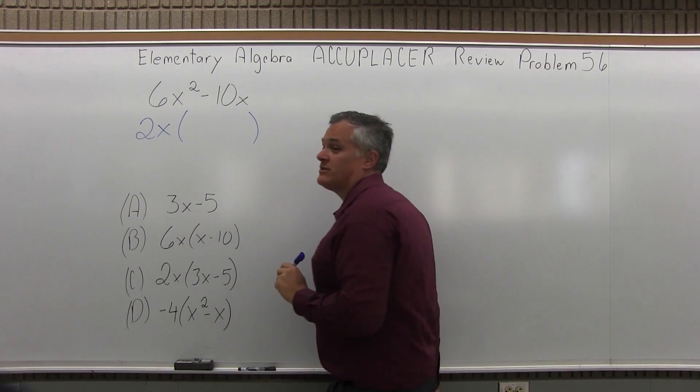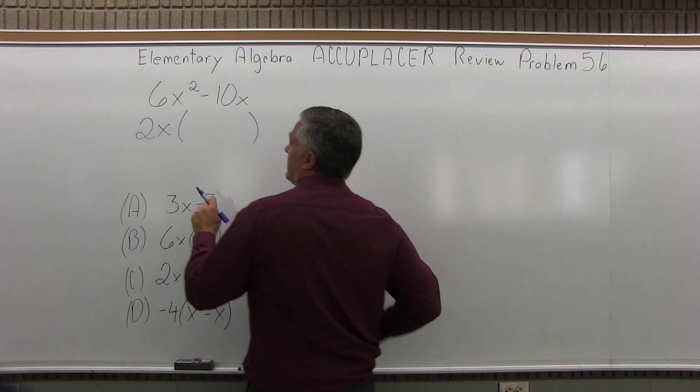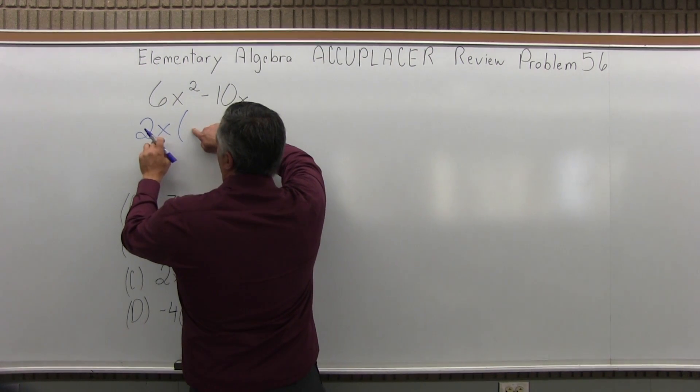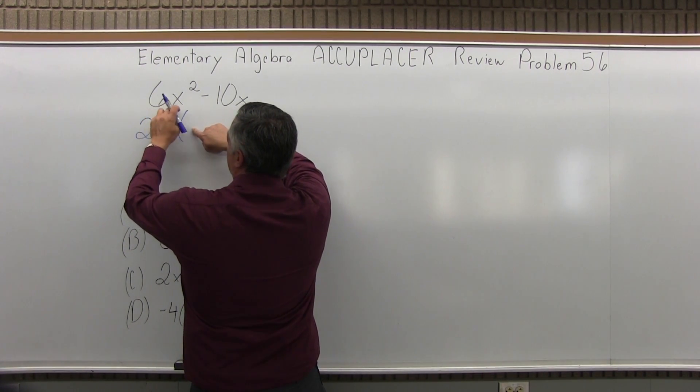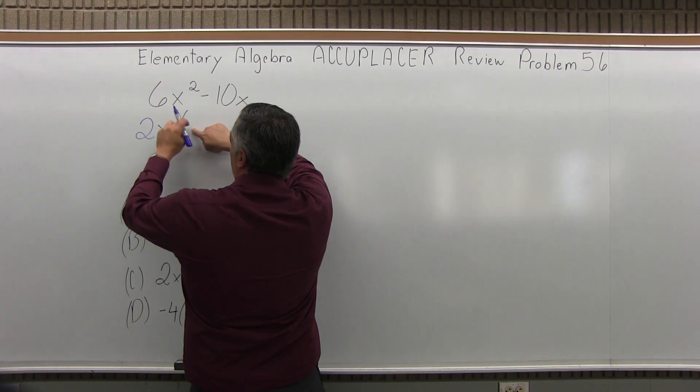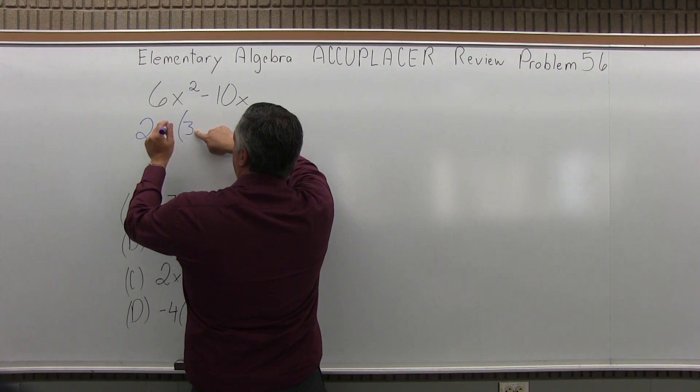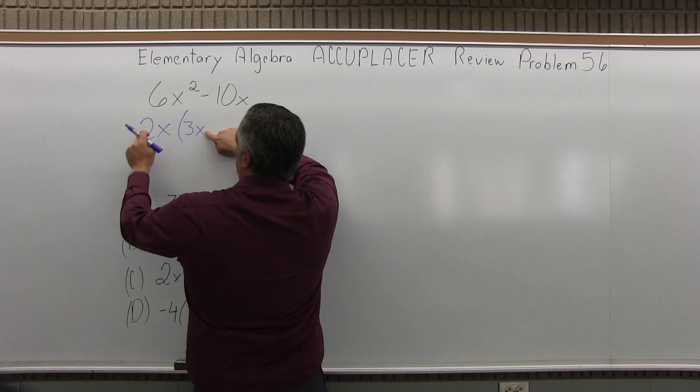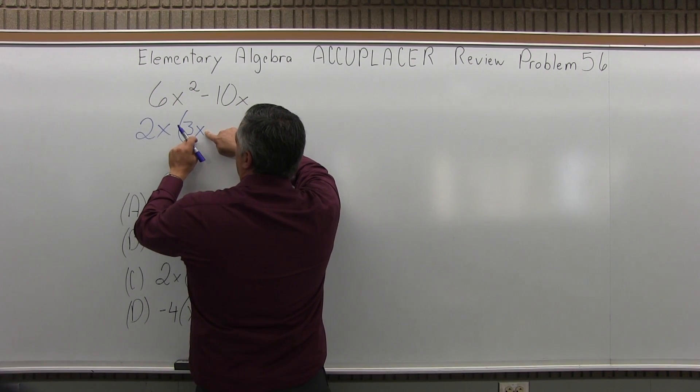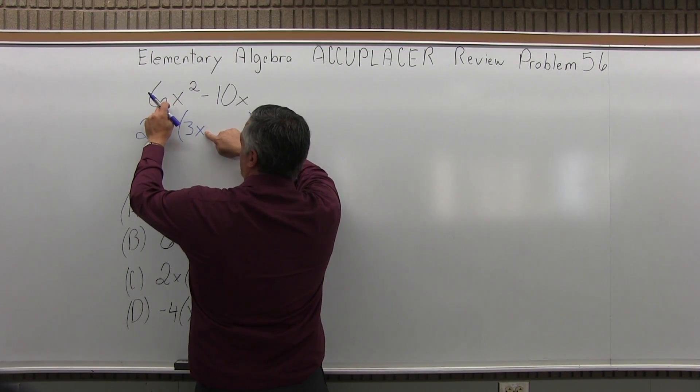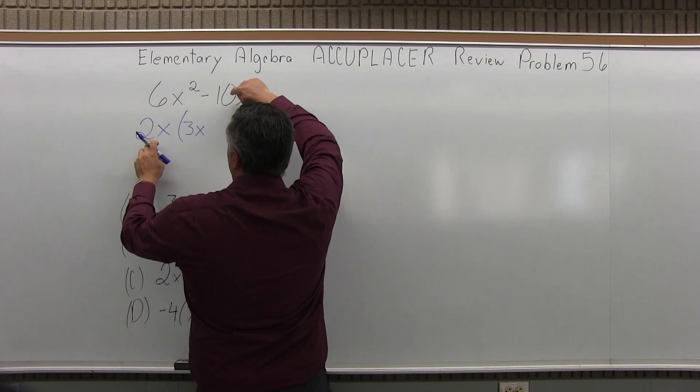So I can put a 2x in front of the parentheses, and now what goes inside the parentheses? Well, 2x times something will be 6x squared. Well, 2 times 3 makes the 6, and x times x makes the x squared. So 2x times 3x does make 6x squared. Now for the next piece,